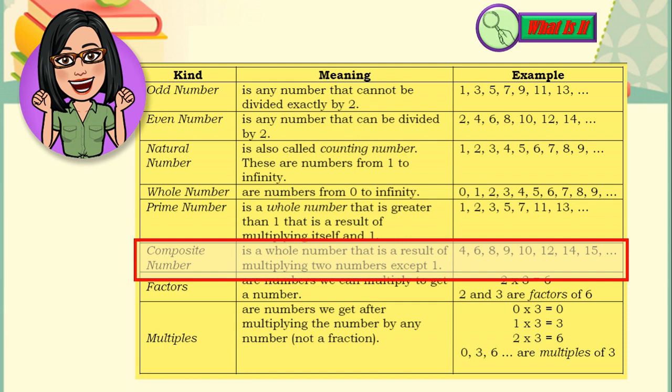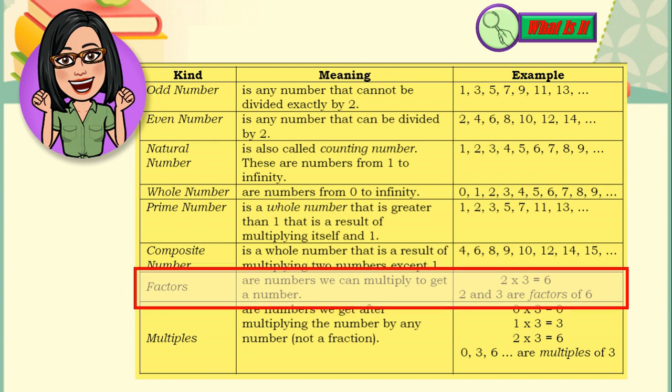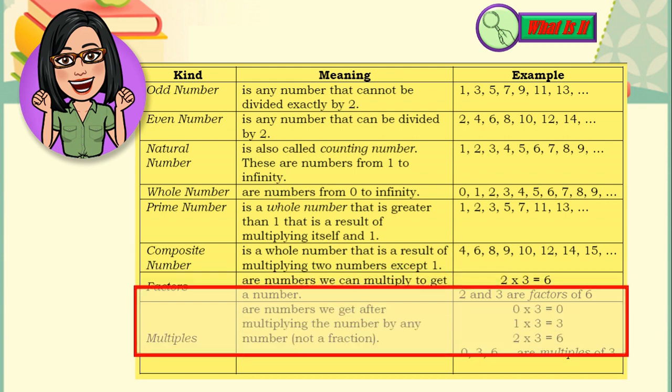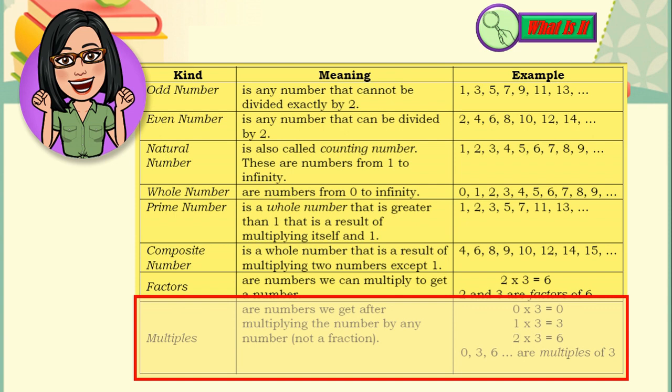Composite number, on the other hand, is a whole number that is a result of multiplying 2 numbers except 1. For example, 4, 6, 8, 9, 10, 12, 14, 15. Factors are numbers we can multiply to get a number. For example, 2 times 3 is equal to 6. And so, 2 and 3 are factors of 6. Multiples are numbers we can multiply to get a number by any number, which is not a fraction. For example, 0 times 3 is 0, 1 times 3 is 3, 2 times 3 is 6. Now, 0, 3, 6 are multiples of 3. Now, again, pause and replay this video as needed.